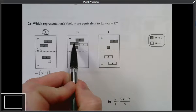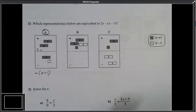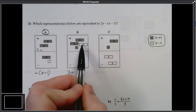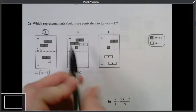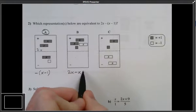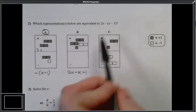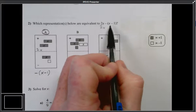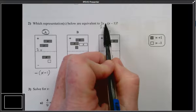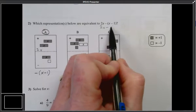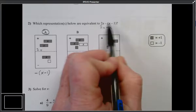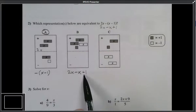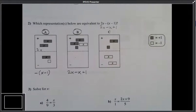This next one, here I have 2x. And then I have a negative x and I have a positive 1. If I go back up here and I simplify this, I have 2x. And I have, right, this is the opposite of x. So this becomes a negative. The opposite of negative 1 becomes a positive. Oh, look. Equivalence. So B is definitely one of the answers.